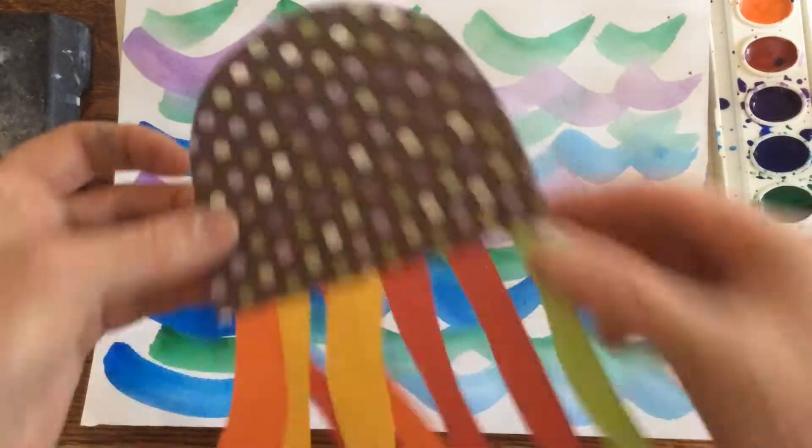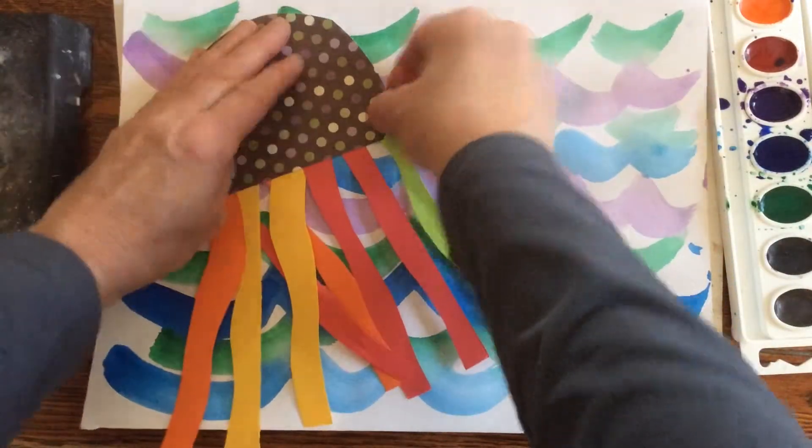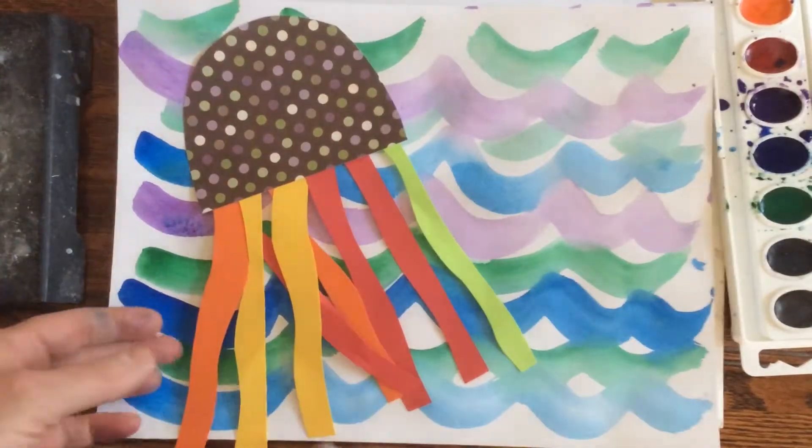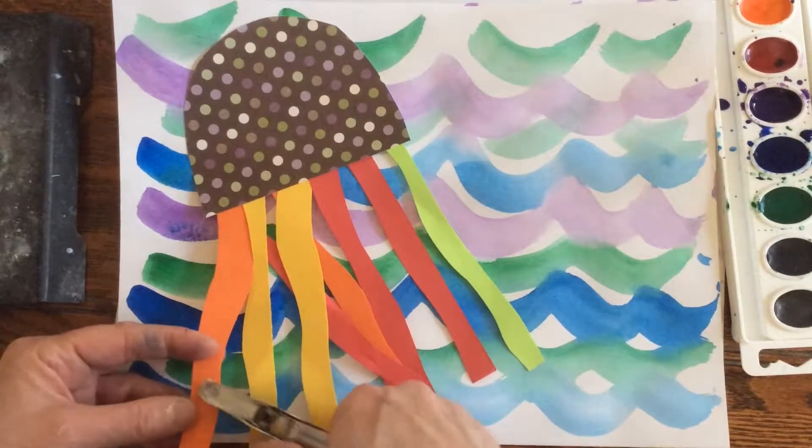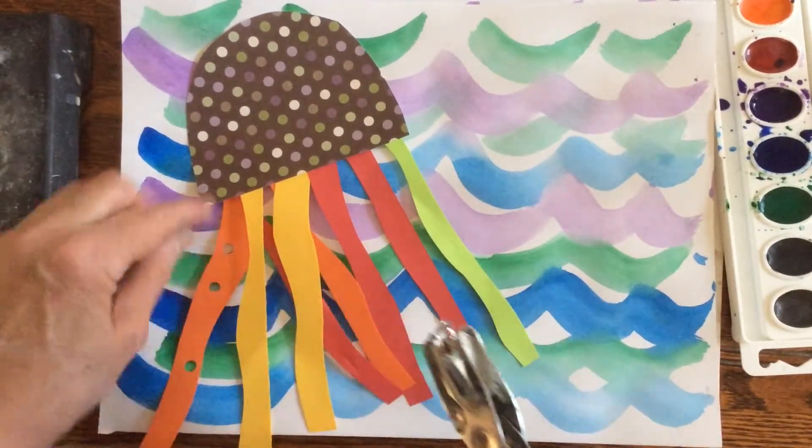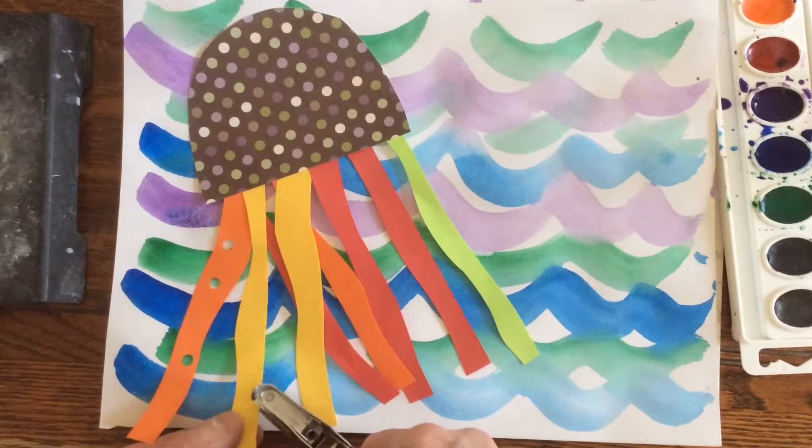Turn it over and glue it to your background with cool color waves. If there's extra time, you can use a hole punch to create texture in the tentacles. Make sure that you take turns with the hole punch.